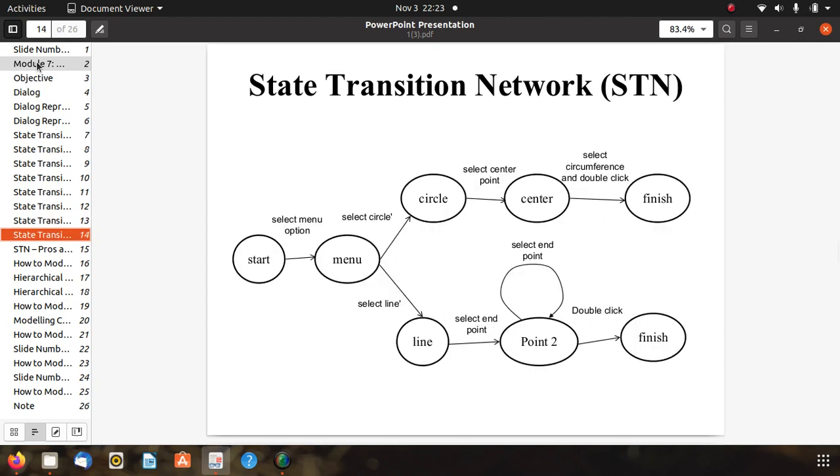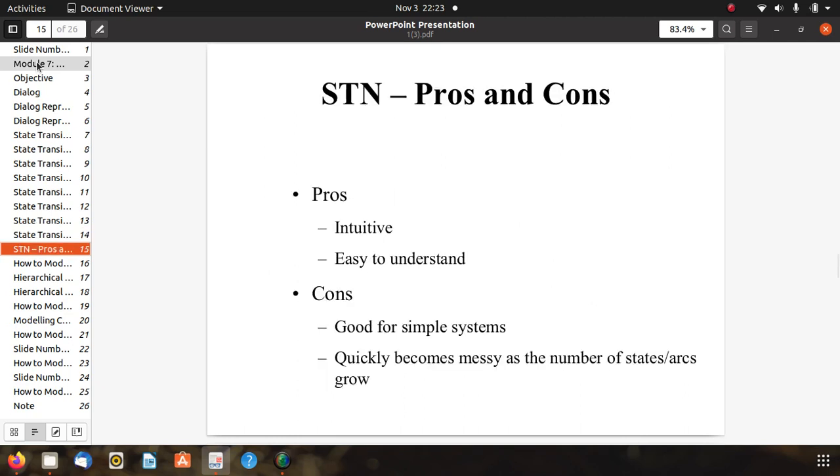Here is the graphical or pictorial representation of the entire process. Start, menu, circle, center, finish. Again menu, line, points, and it is iterative, continuous until the user wants to stop, and then finish. This is a STN, State Transition Network.